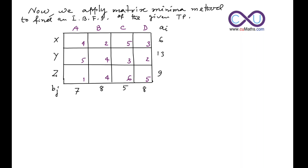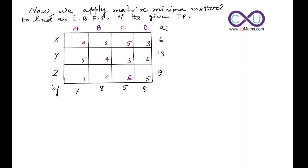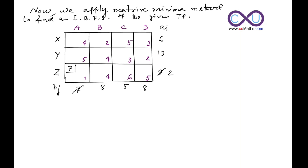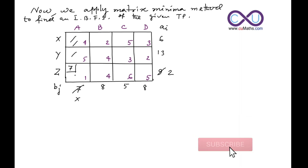Since one is unique, we select this cell. In this cell the demand is 7 and the supply is 9, so we fill this allocation with the minimum of demand and supply. We insert 7 here and cross out that column. There are 2 remaining in supply, so we place a cross symbol on the column — indicating no further insertions in this column.